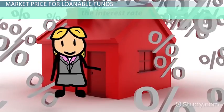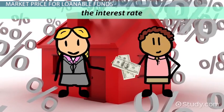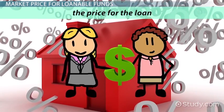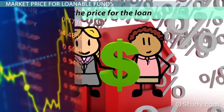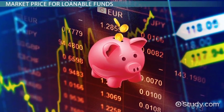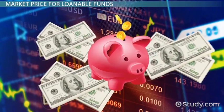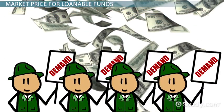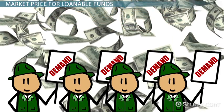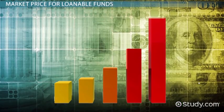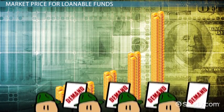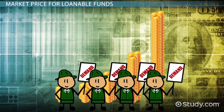You can consider the interest rate a lender earns or a borrower must pay as the price for a loan. Supply is simply the amount of savings in the market that provides the money to fund the loans. Demand is the level of investment seeking financing. As the interest rate on a loanable fund increases, it becomes more expensive to borrow and the quantity of funds demanded will decrease.